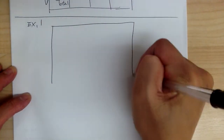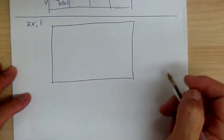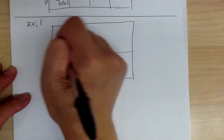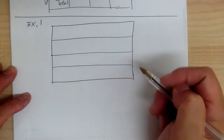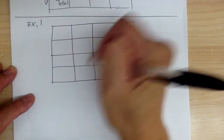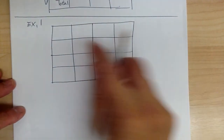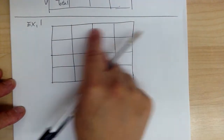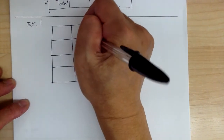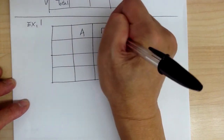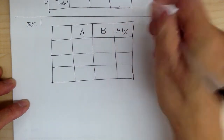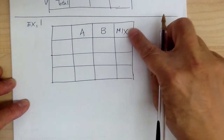When you make the table, draw a rectangle and cut it in half, then cut in half again. Do the same in the other direction. The names of the items go on top — so you have brand A, brand B, and the mix. The mix always goes on the right side, in the back.